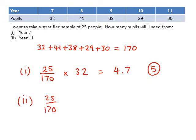Now we're going to move on to year 11. All of these questions start with a fraction. And we've got 25 out of 170 again, because there are 25 people in the sample and 170 pupils in total. This time, there are 30 students in year 11, so we're times-ing by 30.